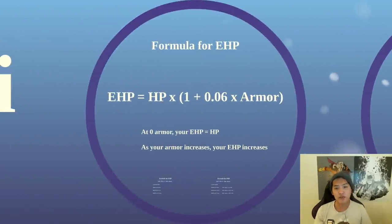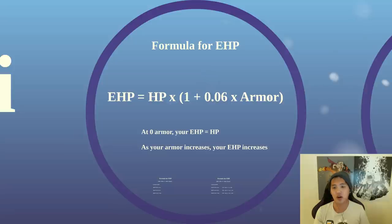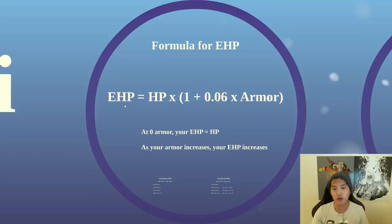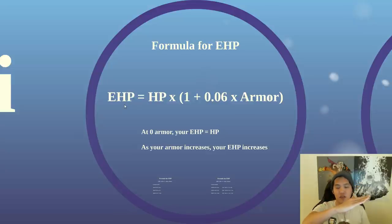The formula for EHP is a rather simple one: EHP equals HP times 1 plus 0.06 times armor. It's easy to tell that at zero armor, this whole term gets nixed — it's HP times 1, and EHP equals HP because you're not mitigating any damage. And as your armor increases, your EHP is going to go up. This is a linear relationship, so each point of armor is going to give you the same amount of EHP — a straight slope if you graph EHP versus armor.